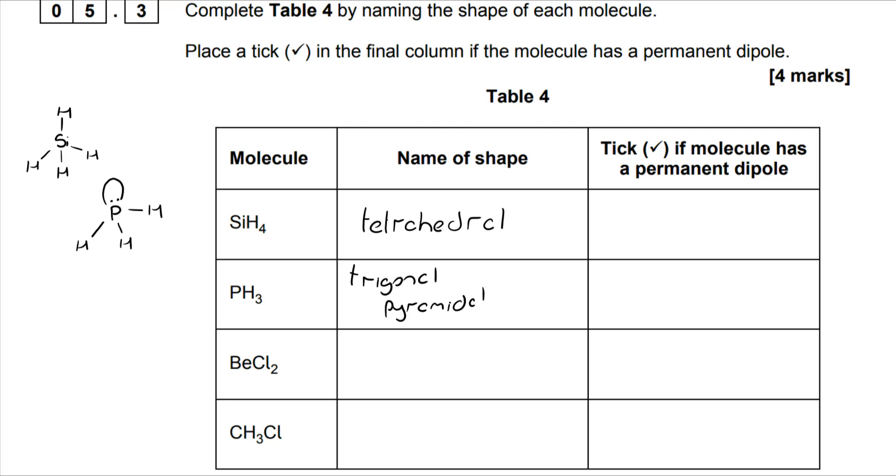PH3 is trigonal pyramidal. Phosphorus is in group five, so it has three bonding pairs, and it has two electrons left over to make a lone pair. So this is based on tetrahedral, but it's trigonal pyramidal. If you were asked, bond angle would be 107 degrees.